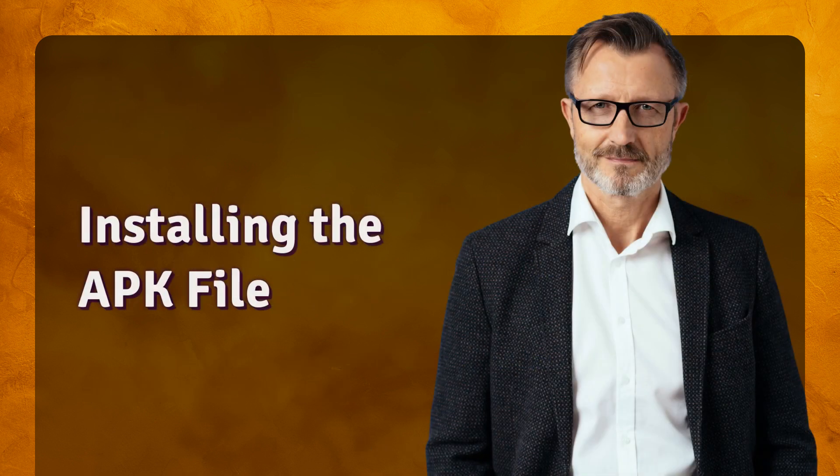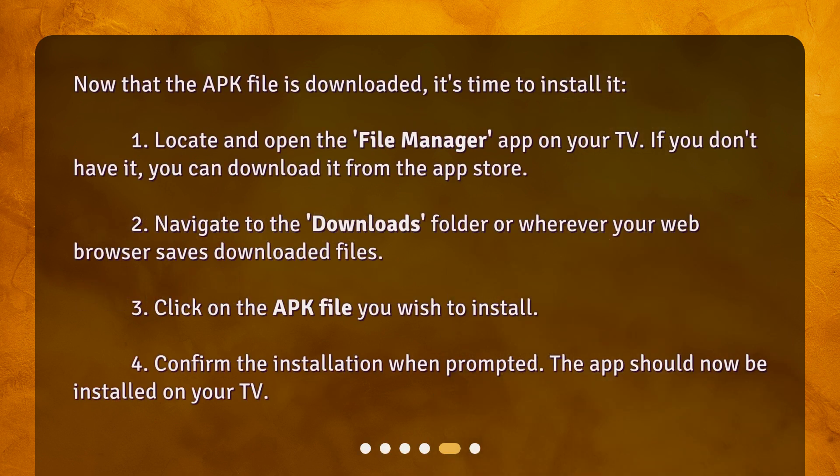Installing the APK file. Now that the APK file is downloaded, it's time to install it. 1. Locate and open the File Manager app on your TV. If you don't have it, you can download it from the App Store. 2. Navigate to the Downloads folder, or wherever your web browser saves downloaded files. 3. Click on the APK file you wish to install. 4. Confirm the installation when prompted. The app should now be installed on your TV.